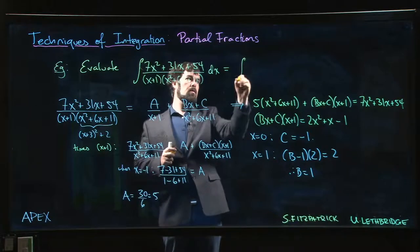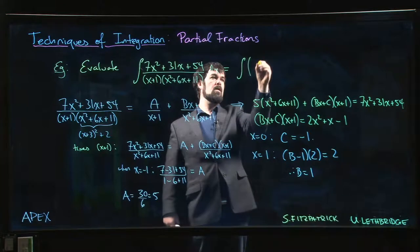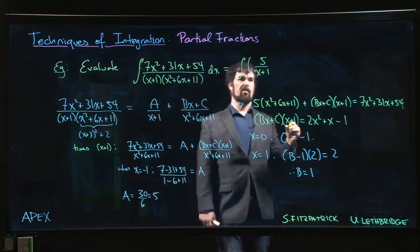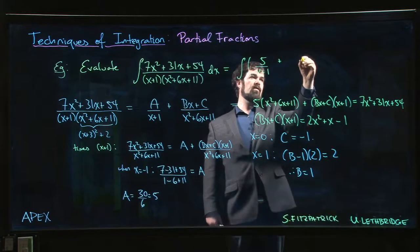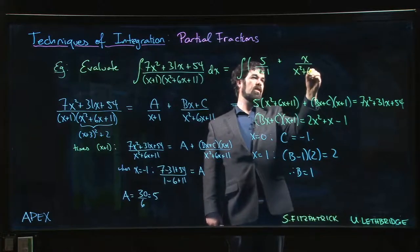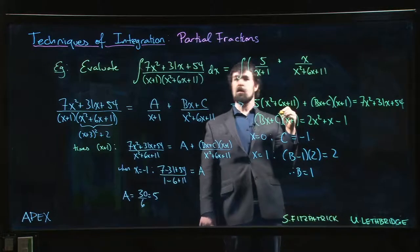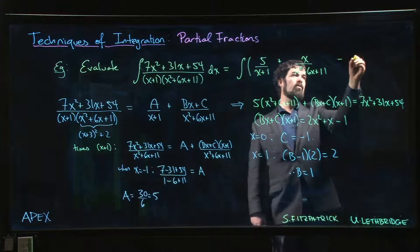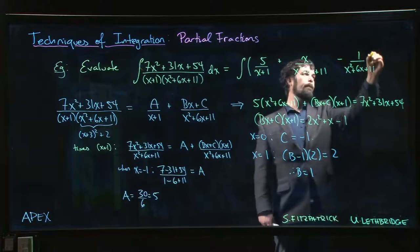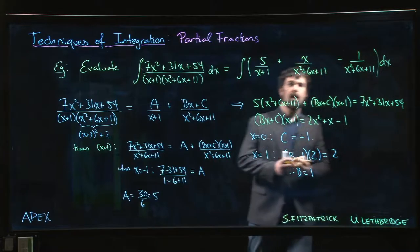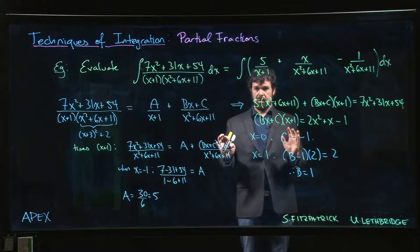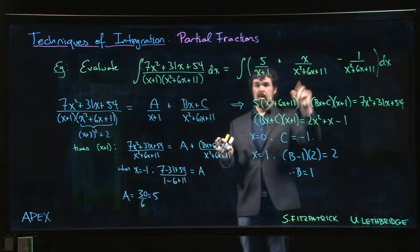So now we can split this up. So we have A, which is 5, 5 over x plus 1 plus Bx, so plus x. And I'm going to do this as x over x squared plus 6x plus 11, and then minus 1 over x squared plus 6x plus 11 times dx. Now, we still have to evaluate the integral. So there's a bit of work to do. But let's pause here. We're already 7 minutes in. We'll take a short break. I'll erase to give myself some room, and we'll polish this off.